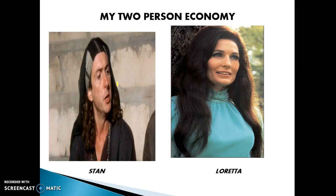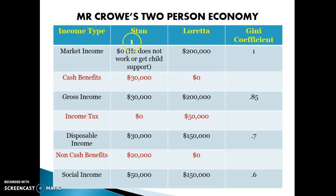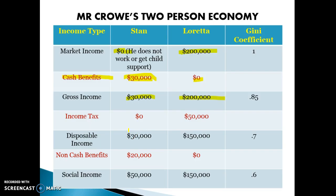Here's an example of a two-person economy to show how the distribution of income works. Stan earned $0 and Loretta earns $200,000. So the market income is zero for Stan and $200,000 for Loretta. The government then gives $30,000 to Stan in unemployment benefits and nothing to Loretta, so for gross income Stan earns $30,000 and Loretta earns $200,000 — the distribution becomes more even.